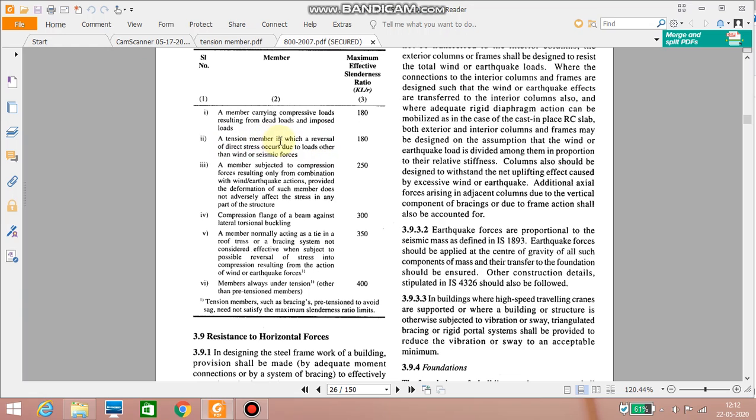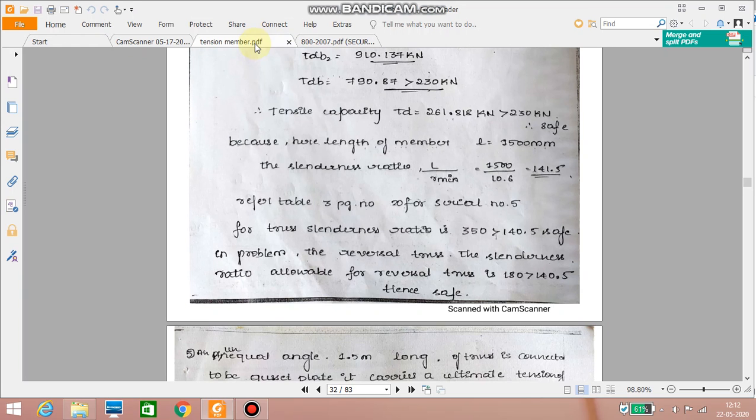That is a second category, a tension member in which reversal of direct stress occurs due to the loads other than the wind and seismic loads. So here the value is 180 is the slenderness ratio so whatever the slenderness ratio we got 141.5 is well less than the slenderness ratio limits. Thanks for watching.